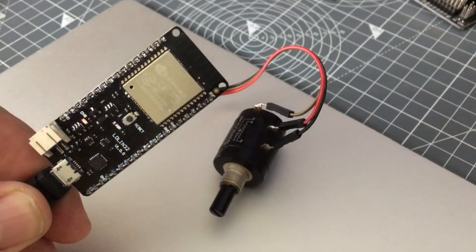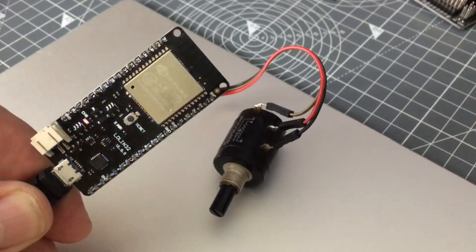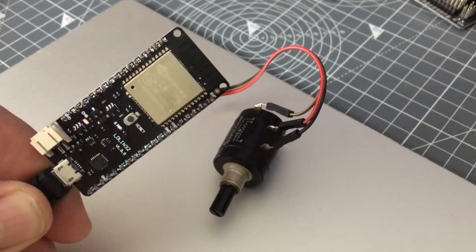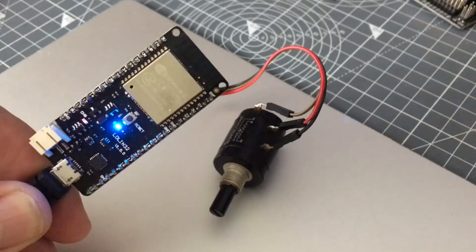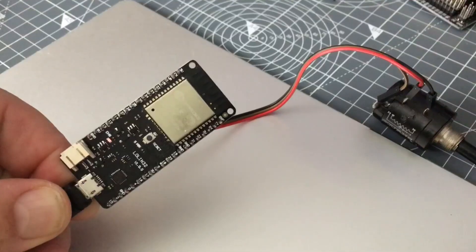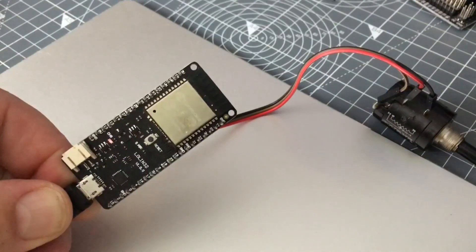Here's an example - I've programmed this Lolin32 with an SPI program. There's no display connected but it doesn't matter. You can see the SPI program is illuminating the LED because it uses pin 5. So what I've done is changed the slave select pin from pin 5 to pin 2 so it doesn't interfere with the built-in LED. On my display I would change the wiring accordingly. When I recompile the program there's no interaction with the LED.